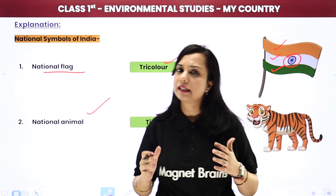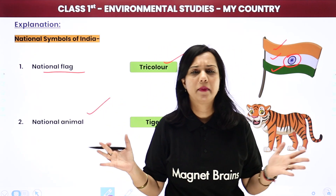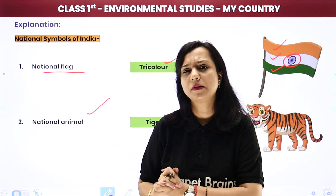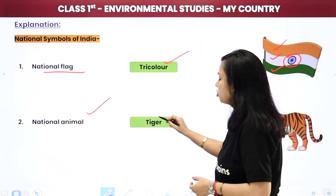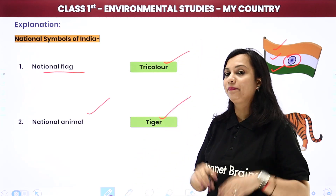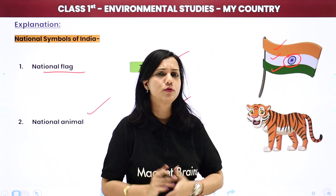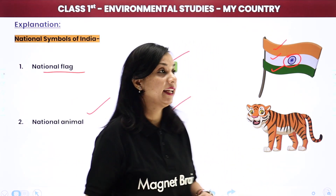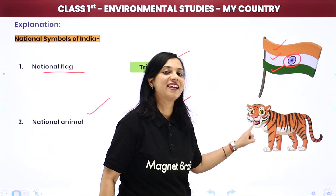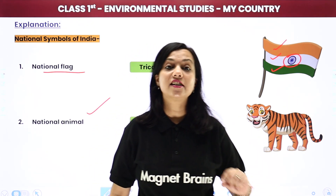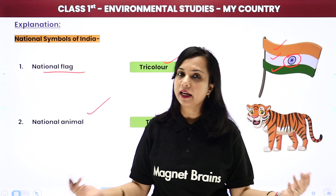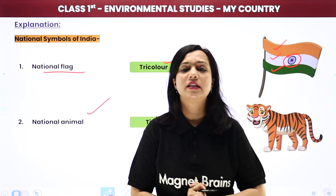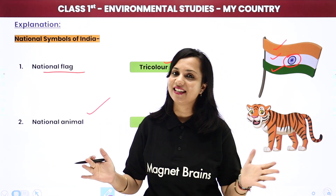National animal - ab symbols ki baat ho rahi hai, toh sab ke baare mein baat karenge na. Animals mein jo national hai, animals ka jo sabse important symbol hai, woh hai children - Tiger. Agar haamari country ke baare mein poocha jaaye, koon hai haamari country ka national animal, toh hum sab batayenge that our national animal is tiger children. Hamari desh ko tigers ke naam se jaana jaata hai, aur is liye haamari desh ka jo national animal hai, that is tiger.